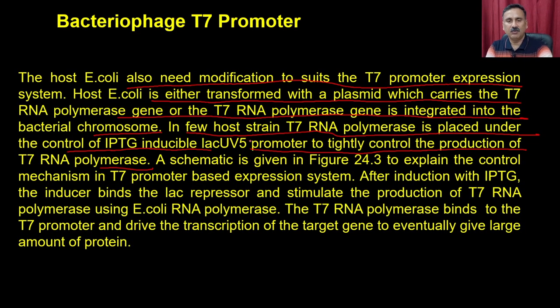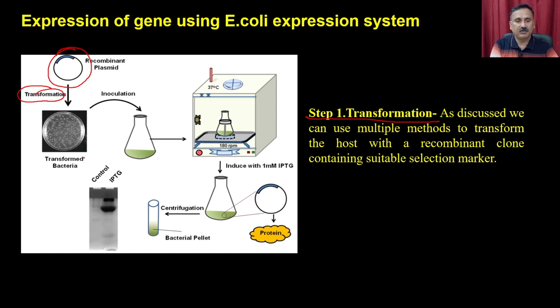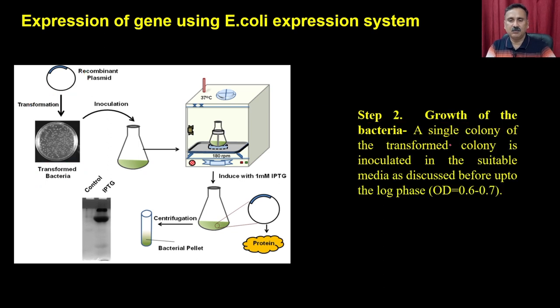For either of these promoters, the first step is to transform the recombinant DNA into the host and then do the protein production. In step 1 you do the transformation — you take the recombinant plasmid and transform it into a suitable bacterial strain to get the transformed bacteria. You can use multiple methods of transformation such as the calcium chloride method or electroporation.